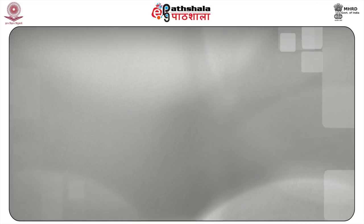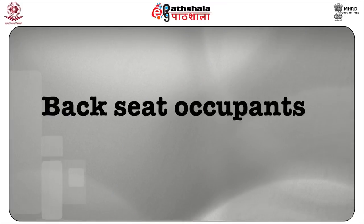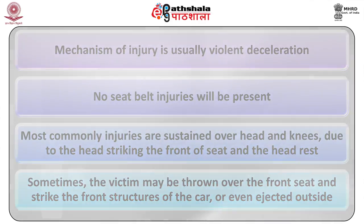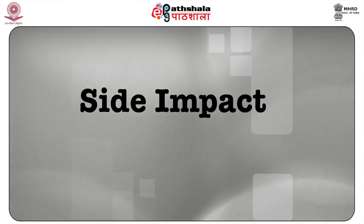The front seat occupant follows the same sequence of injuries as the driver except that steering wheel injuries will not be present; instead, dashboard injuries will be seen. In back seat occupants, the mechanism of injury is usually violent deceleration, with no seatbelt injuries present. Most commonly, injuries are sustained over the head and knees due to the head striking the front seat and headrest. Sometimes the victim may be thrown over the front seat and strike the front structure of the car or even be ejected outside.